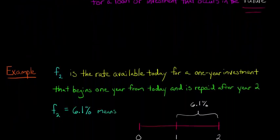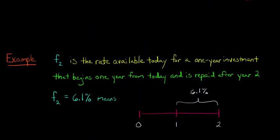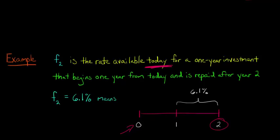As an example, the forward rate for year two — for the second year — would be the rate that you could get today, assuming that you wanted a one-year investment that was going to start one year from right now. So we're at period zero, and we're wanting to lock in an interest rate for a one-year investment that's going to go from the end of year one to the end of year two.